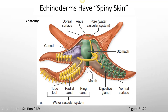Looking at the anatomy, echinoderms have a mouth and an anus, with a stomach in between. There are gonads, a primitive nervous system, digestive glands, and tube feet.